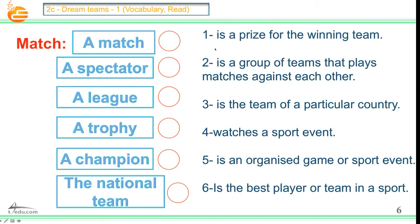After we saw the picture, what do you think? It's a prize for the winning team. Number two: it's a group of teams that plays matches against each other. Number three: it's a team of a particular country. Number four: watches a sport event. Number five: it's an organized game or sport event. Number six: it's the best player or team in a sport. These are the definitions of these words. Which one is which? I hope you got it.